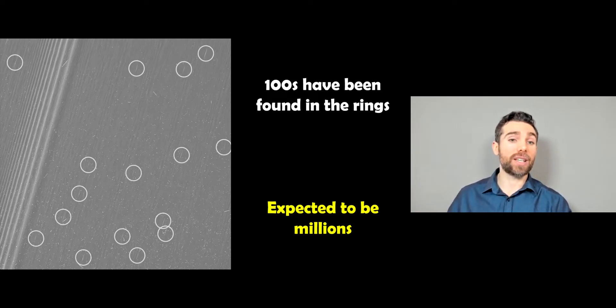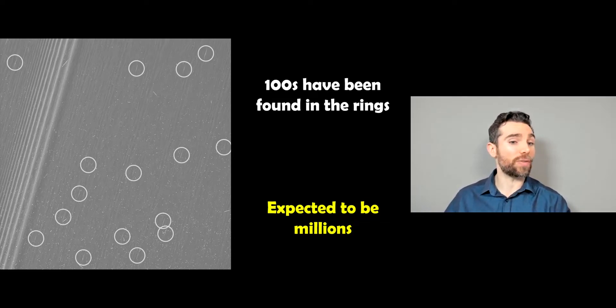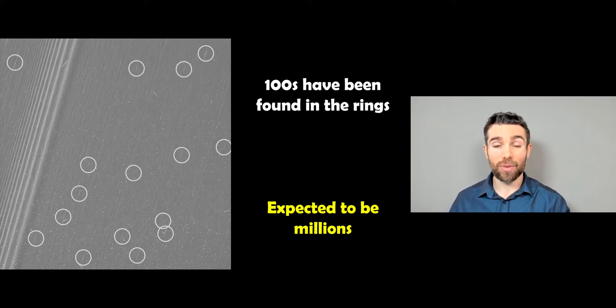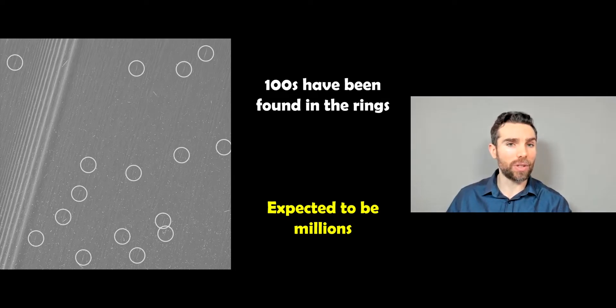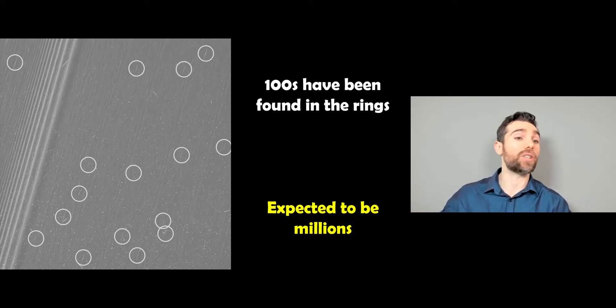And the other interesting thing is that the size of the propeller can be used to determine the size of the moon or moonlet. Because if you have a look at these images, and the ones we had a look at before, you can't actually resolve the moon in the center. They're too small. And we can only just about resolve the ones that are kilometers sort of size. But these ones are much smaller. So we can't actually see them. So the only way we can really determine what's there is the structure and the disturbance that they make on the ring.